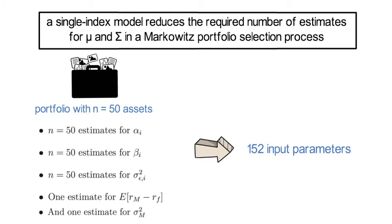These are still quite a lot, but it's roughly a 90% reduction relative to the 1,325 parameter estimates that a full mean-variance portfolio optimization input list requires.